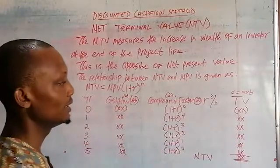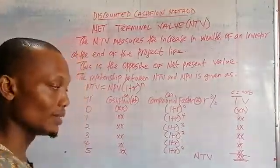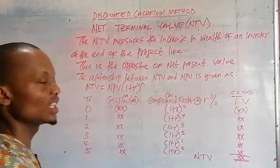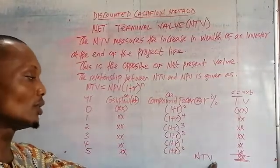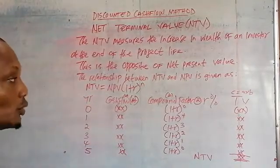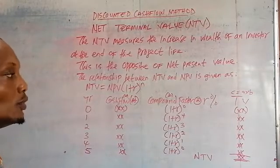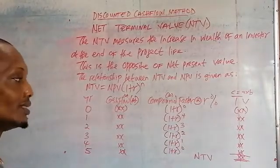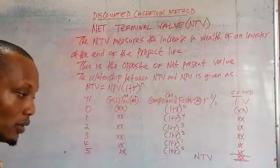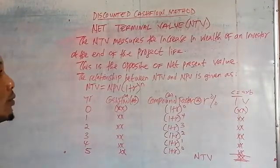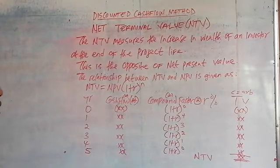At the end of the day, as the name suggests, net terminal value is the aggregation of the cash inflows minus the initial outflow. From there you get your net terminal value. In simple terms, the net terminal value is directly opposite to the net present value. Net present value brings the future to the present, while net terminal value takes the present cash flows of the project to the end to know the value at the end of the project's life.